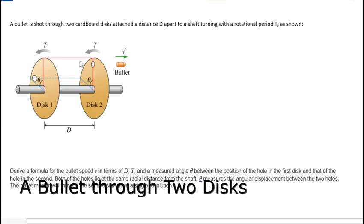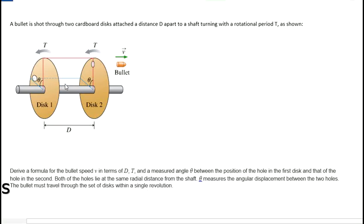Alright, here we have a physics problem involving angular velocity. A bullet is shot through two cardboard discs, a distance d apart, attached to a shaft turning with a rotational period T. That T is the time it takes each of these discs to go through 2π radians or one full revolution.